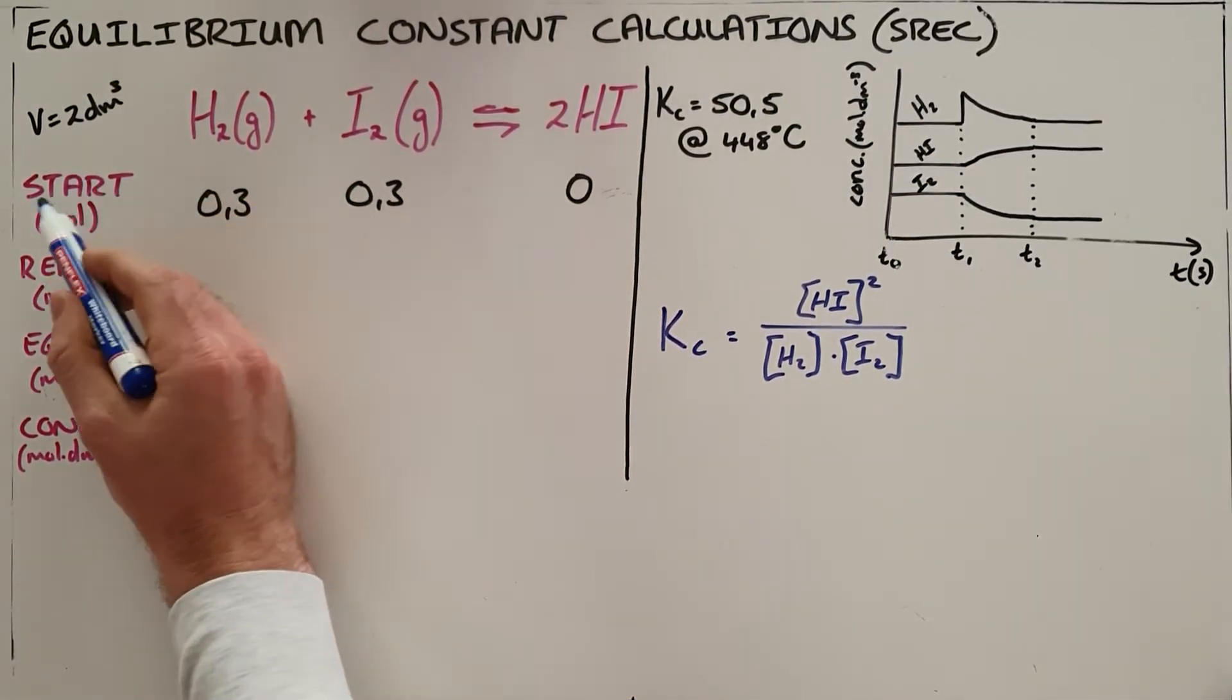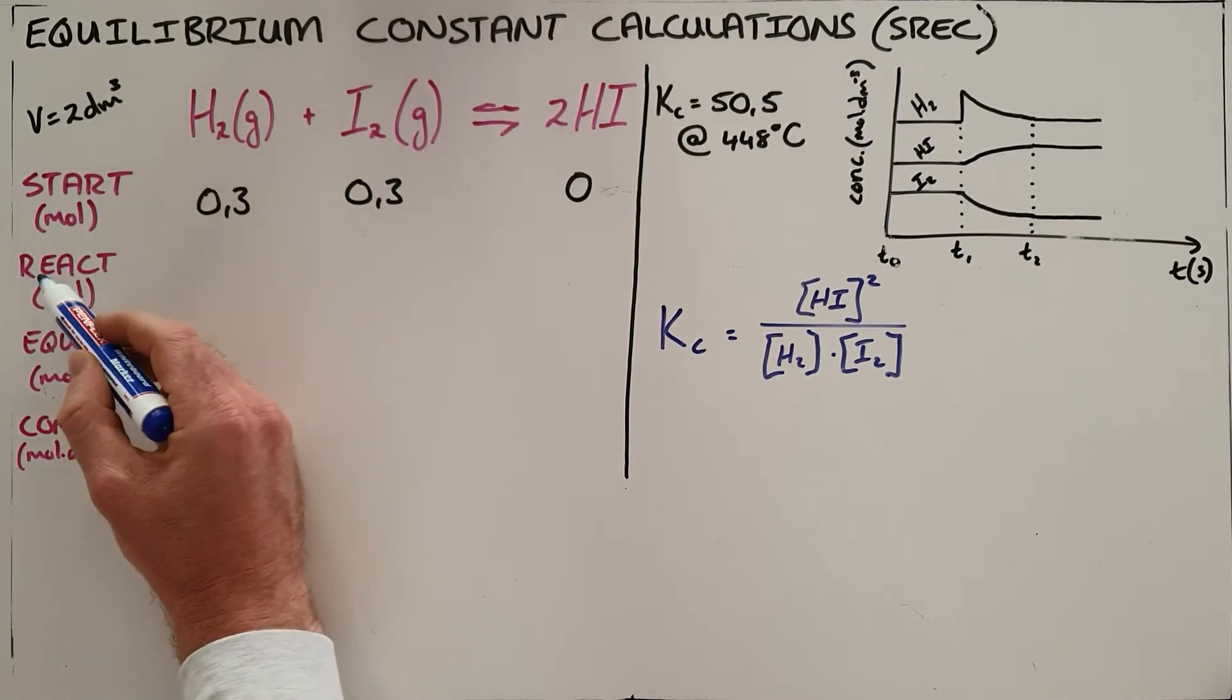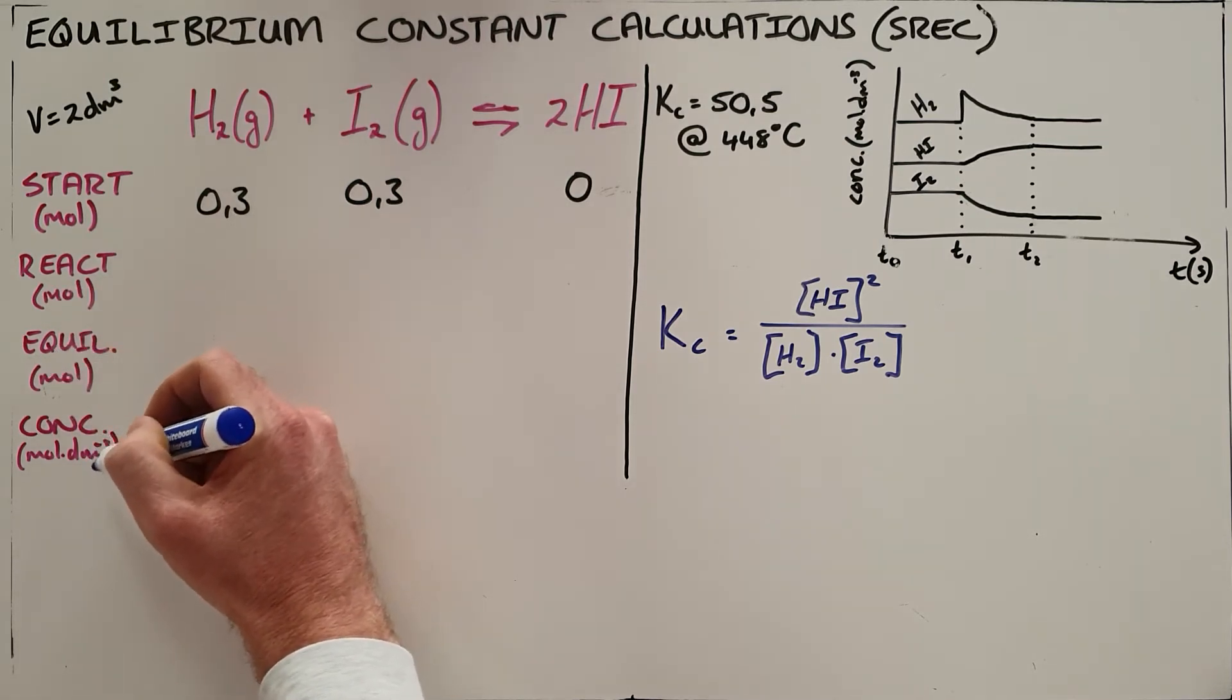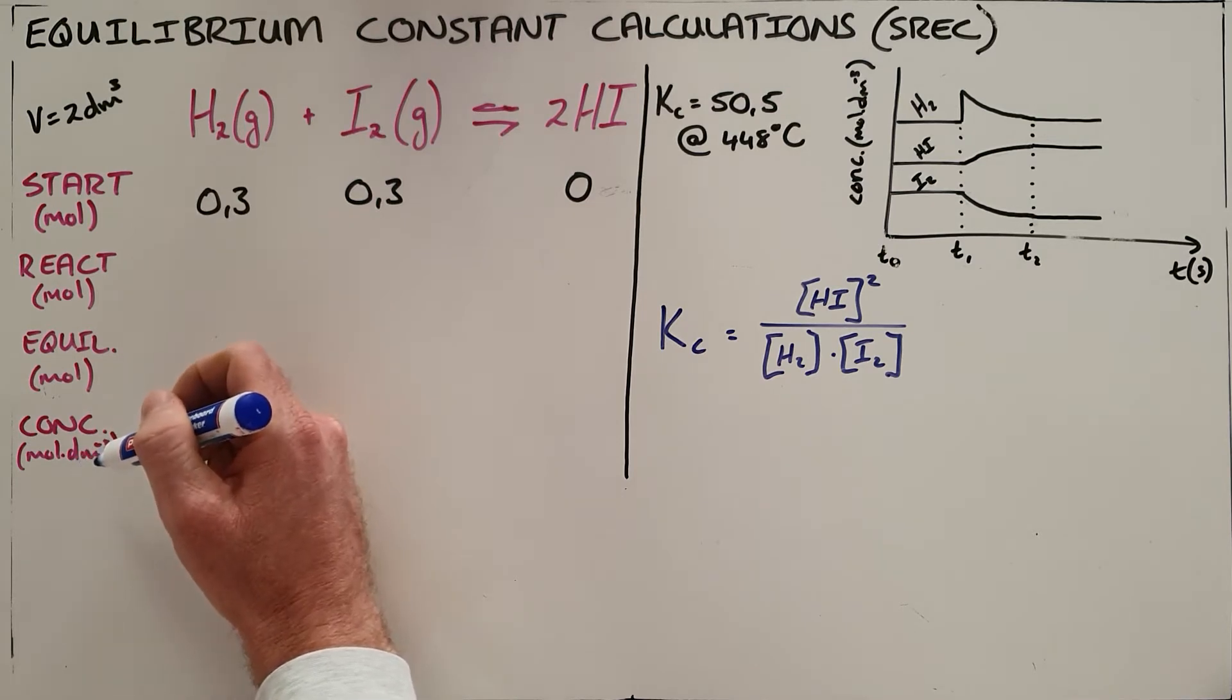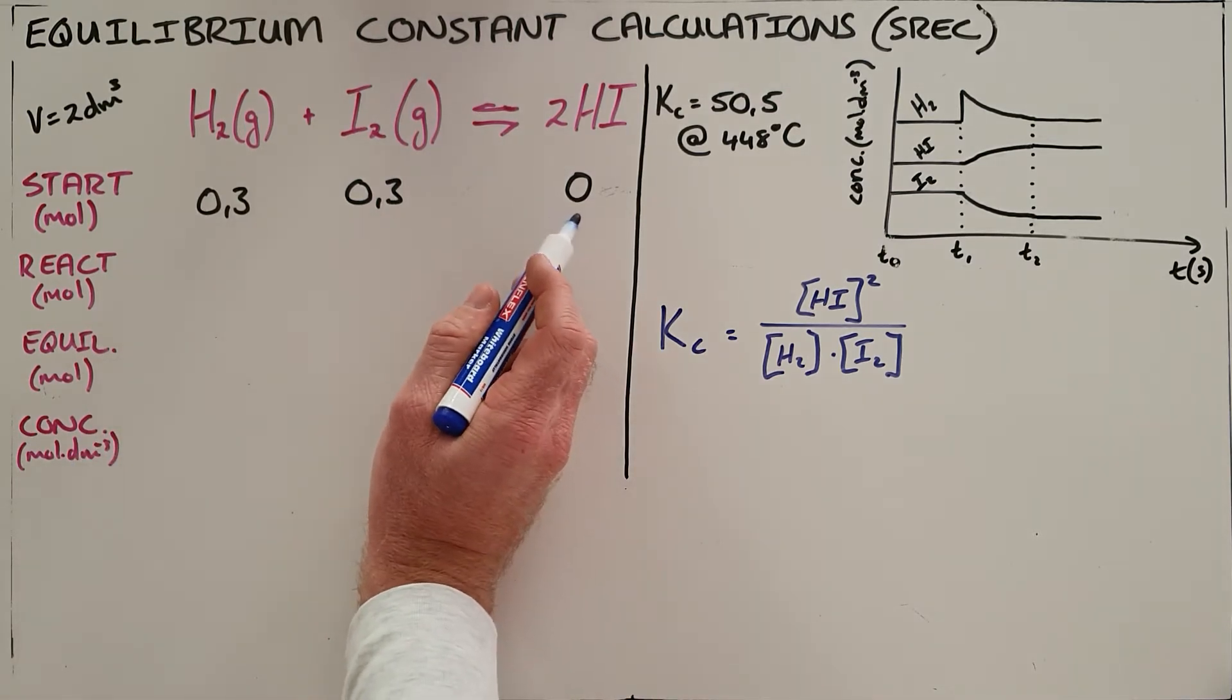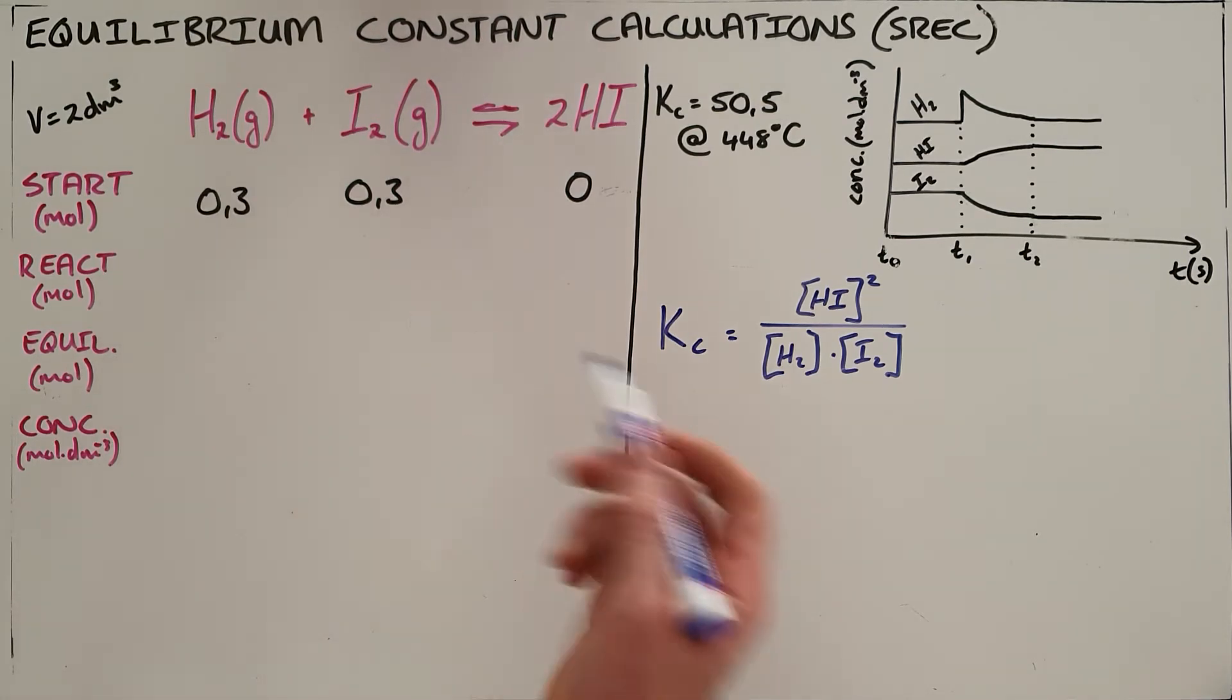In your Schreck table, S means the starting number of moles, R means the reacting number of moles, E means the number of moles at equilibrium, and C means the concentration at equilibrium. Once we fill in our initial values, we are forced to introduce a variable.